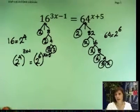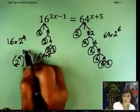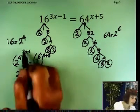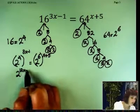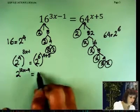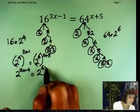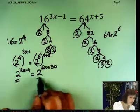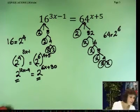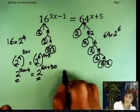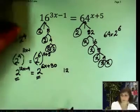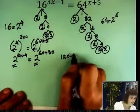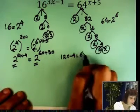Before I start solving, exponent over exponent, what does that mean? You have to multiply them. 2 to the, 3 times 4, 12, minus 4. 2 to the, multiply it out, 6x plus 30. Now bases match, that means the exponents have to match. So let's write down the equation. 12x minus 4 is 6x plus 30.